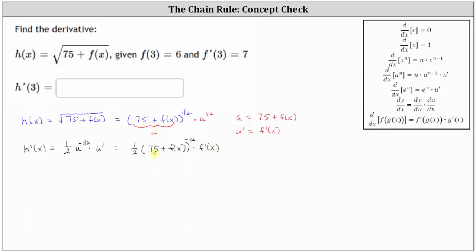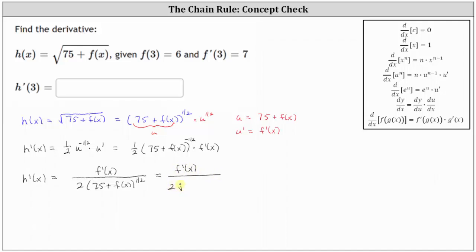Let's go ahead and write this using a positive exponent. We have h prime of x equals f prime of x in the numerator, divided by two times the quantity 75 plus f of x raised to the power of positive 1/2. We can also write this back in radical form: f prime of x divided by two times the square root of the quantity 75 plus f of x.